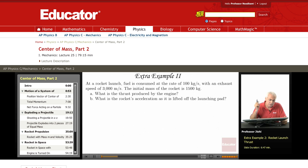We have a rocket launch. Fuel is consumed at the rate of 100 kilograms per second with an exhaust speed of 3000 meters per second. The rocket is here and fuel is coming out at the rate of 100 kilograms per second. The initial mass of the rocket is 1500 kilograms. What is the thrust produced by the engine?